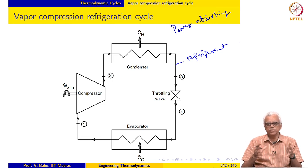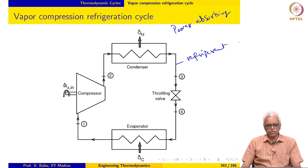The Brayton cycle is the one which is usually not run as a cyclic process. Air is drawn in and then combustion gases are exhausted. In the case of the vapor compression also, refrigerant executes a cycle.